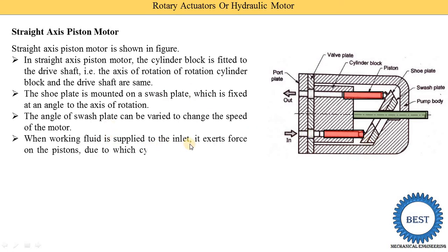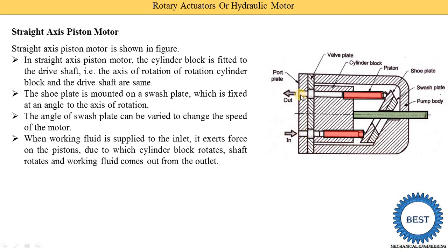When working fluid is supplied to the inlet it exerts force on the pistons. There is one inlet and one outlet. From the inlet we supply hydraulic oil for a hydraulic motor, or compressed air or gas for a pneumatic motor. When the oil or gas applies force on the piston, the piston starts to reciprocate, and due to this reciprocation the cylinder block also starts to rotate. Since the cylinder block is attached to the shaft, the shaft also starts to rotate and the working fluid exits from the outlet. Our main function is to achieve mechanical energy, which is achieved through this shaft.